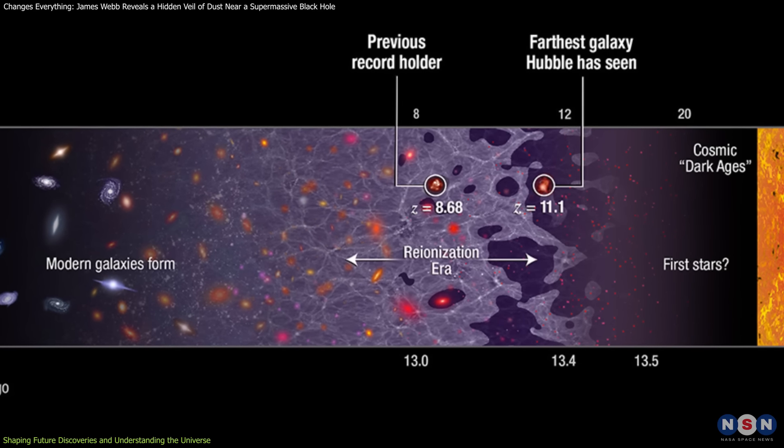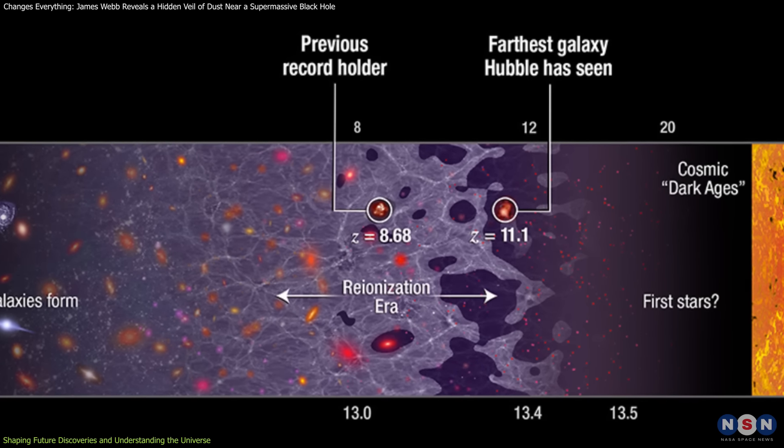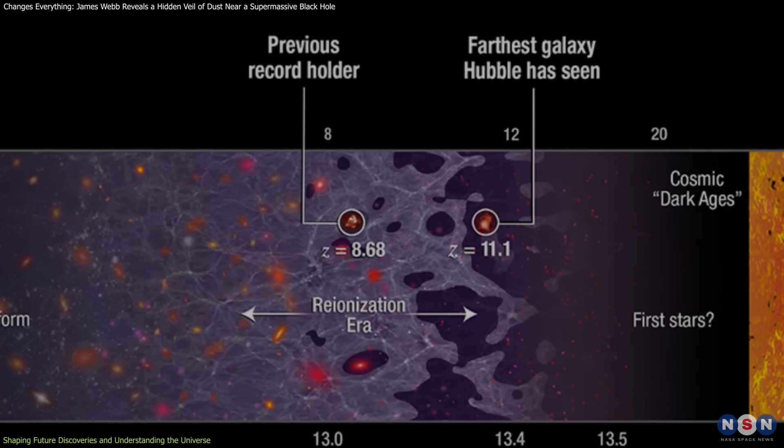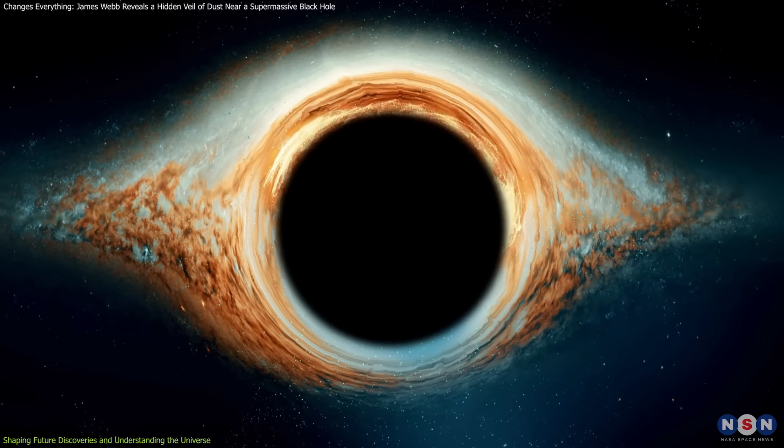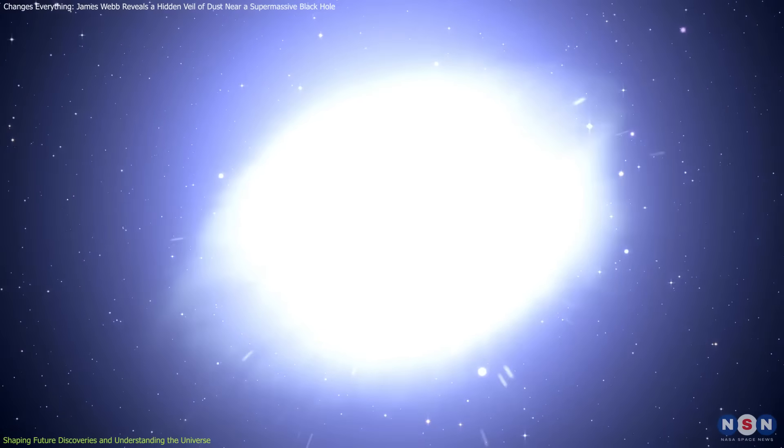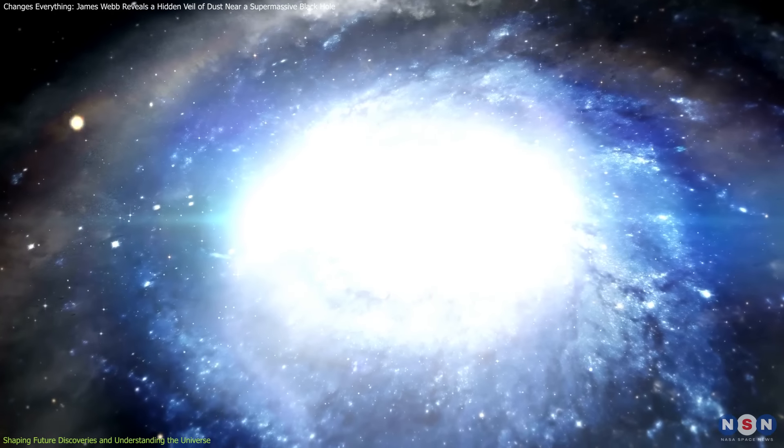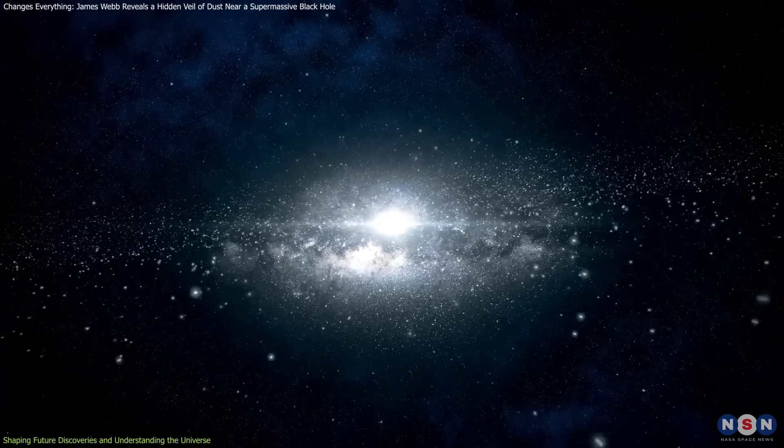Take GNZ 11, for example, a galaxy that existed when the universe was only about 400 million years old. At its core lies a black hole approximately 6 million times the mass of our Sun, a discovery that has left scientists rethinking how such massive objects could have formed so rapidly after the universe's birth.